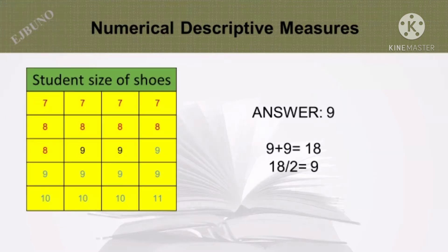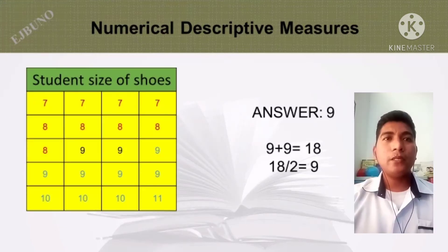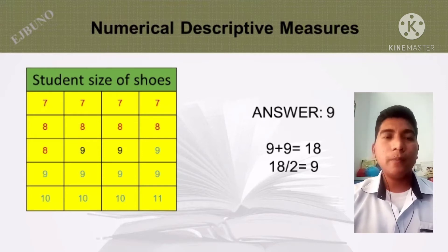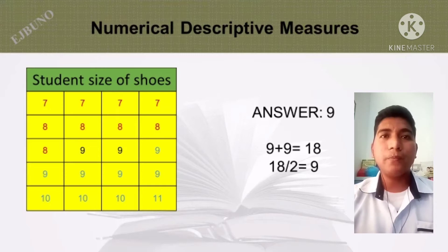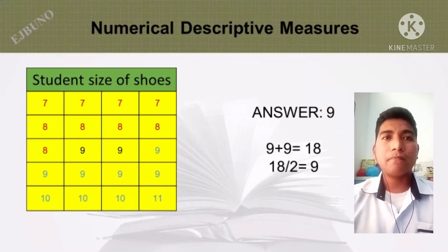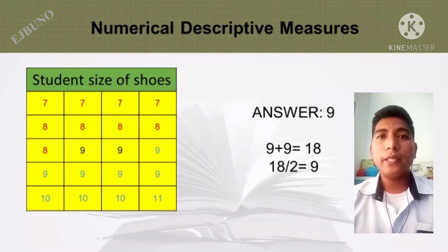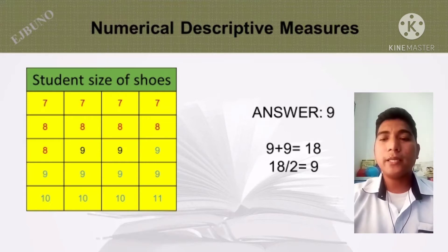Example: In the table showing shoe sizes of students, the values range from 7, 7, 7, 8, 8, and so on, up to size 11. The median is 9, because 9 is the middle value. Adding the two middle values gives 18, and dividing by 2 gives 18 divided by 2 equals 9. So the answer is 9.